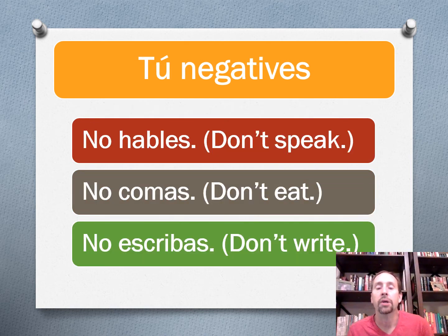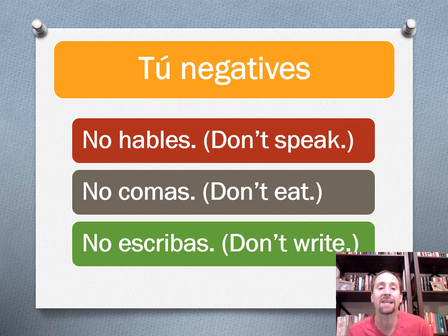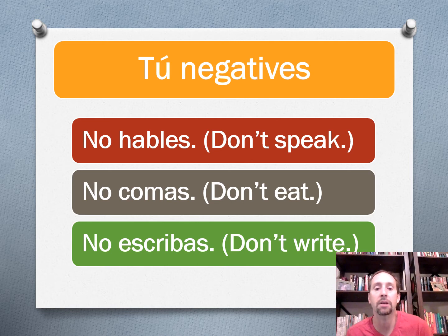Then we've also got tú negative commands. If you're familiar with the subjunctive, it's going to be the same form — it's going to have the opposite ending. So an AR verb is going to end in E, and an ER or IR verb is going to end in A. So if I want to say don't speak: no hables. Don't eat: no comas. Don't write: no escribas.